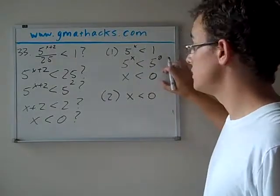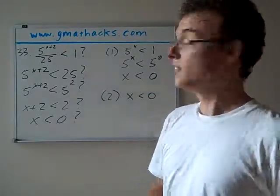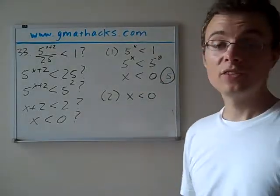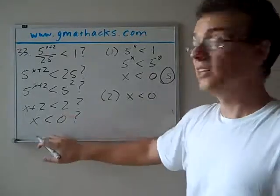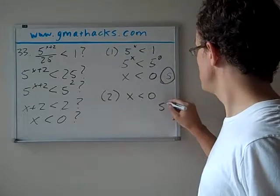Statement 1 tells us x is less than 0. Is x less than 0? It doesn't get much easier than that. So this is sufficient. And then for statement 2, that just comes right out and tells us x is less than 0. Is x less than 0? Again, it doesn't get any easier than that. So this is sufficient as well.